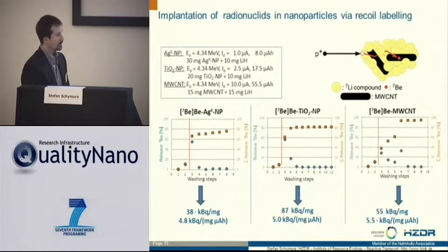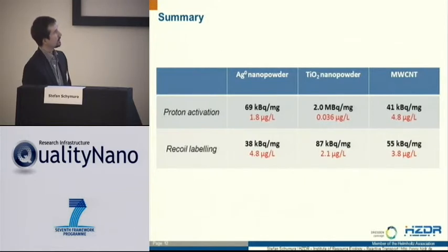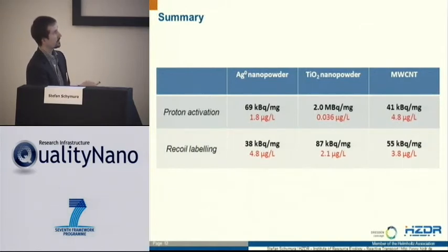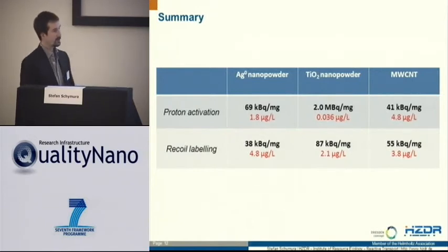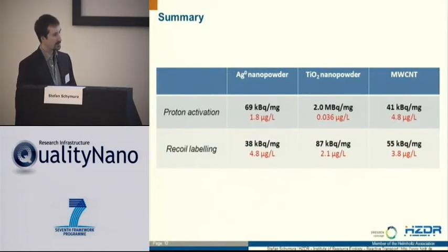For the multi-wall carbon nanotubes and the titania, we didn't see any changes in properties. But for the silver, it's the same problem as before with the temperature. To summarize yields and detection limits: the method is mainly useful for titanium and multi-wall carbon nanotubes. Especially for titanium with proton activation, we get detection limits of nanogram per liter. For the silver, we have detection limits but the particles are not nano anymore, so we have to think of something else. I invite you to check out my poster, where I show different methods for radiolabeling silver with conservation of properties and size.